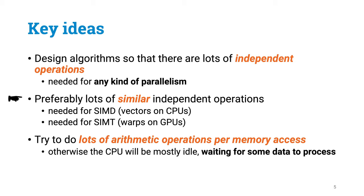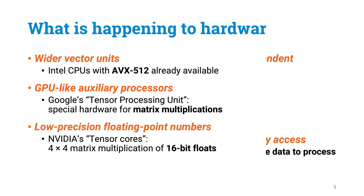In addition to having lots of independent operations, it would be also good to try to arrange things so that you've got lots of similar independent operations. This way you can much more easily benefit from vector operations, and you are also making the life of the GPU easier, as the GPU executes the entire warp always in a synchronous manner. And as memory tends to be always very slow, no matter what kind of memory you are talking about, you want to design your algorithms so that you can do lots of useful arithmetic operations per memory access.